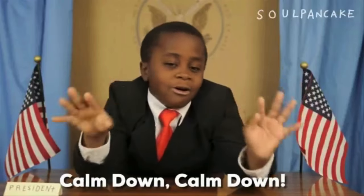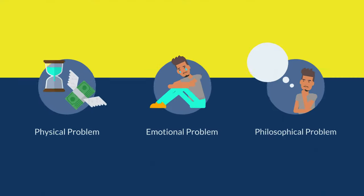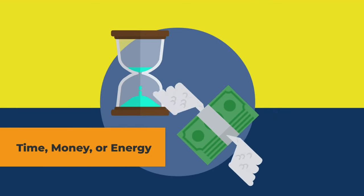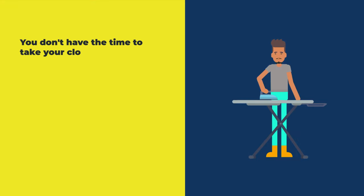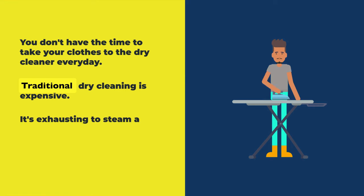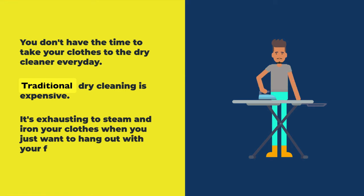Next is the problem section. The problem section of your website is so important because it makes what you do valuable and interesting. The best stories have a problem — the best websites also state the customer's problem, which makes your customer feel understood. There are three types of problems to describe: the physical, emotional, and philosophical problems. The physical problem usually comes down to things like time, money, or energy. For example: 'You don't have the time to take your clothes to the dry cleaner every day, and traditional dry cleaning is expensive and exhausting.'